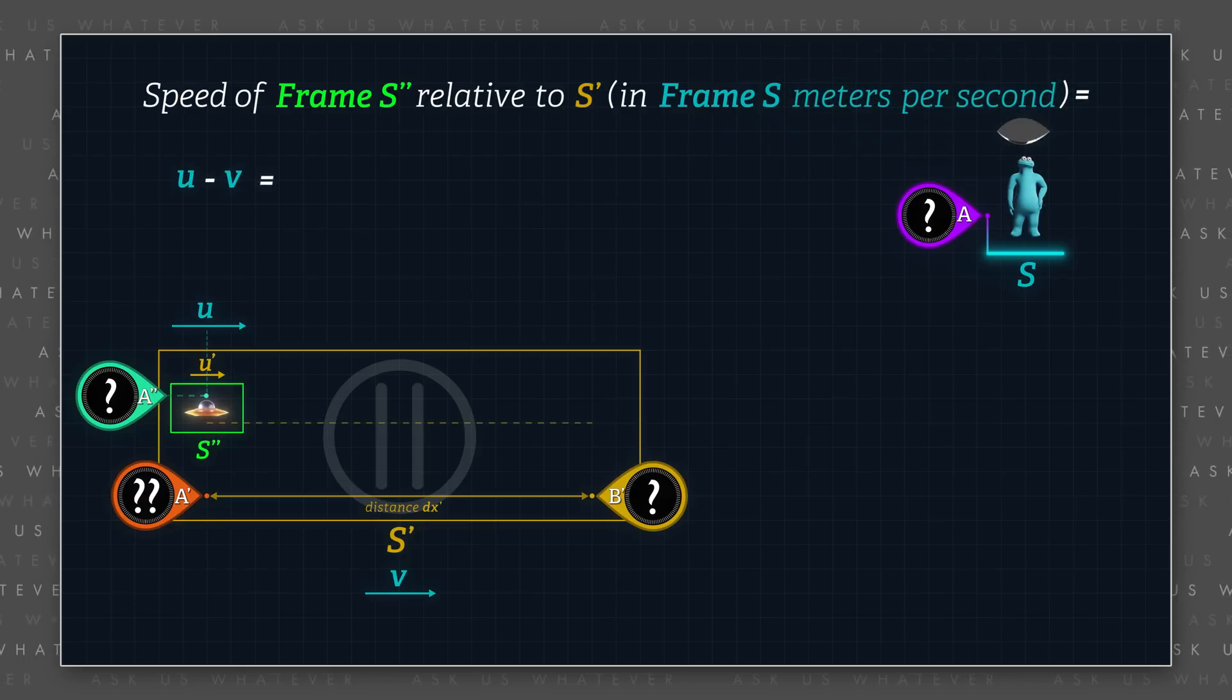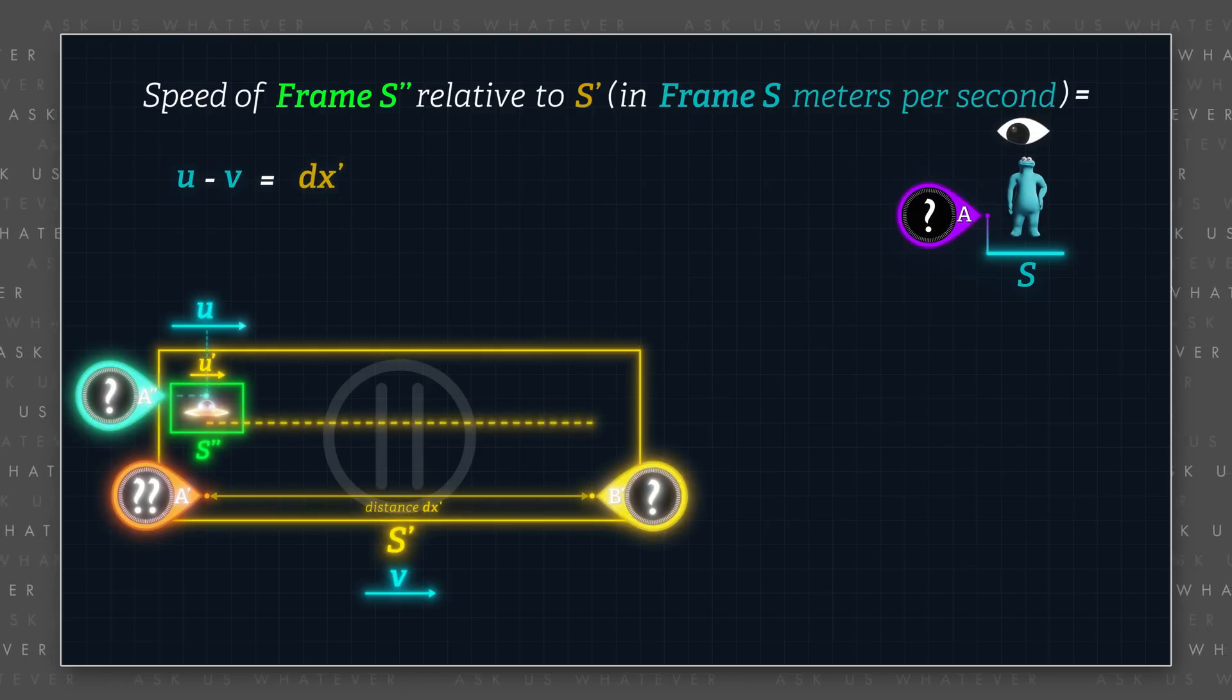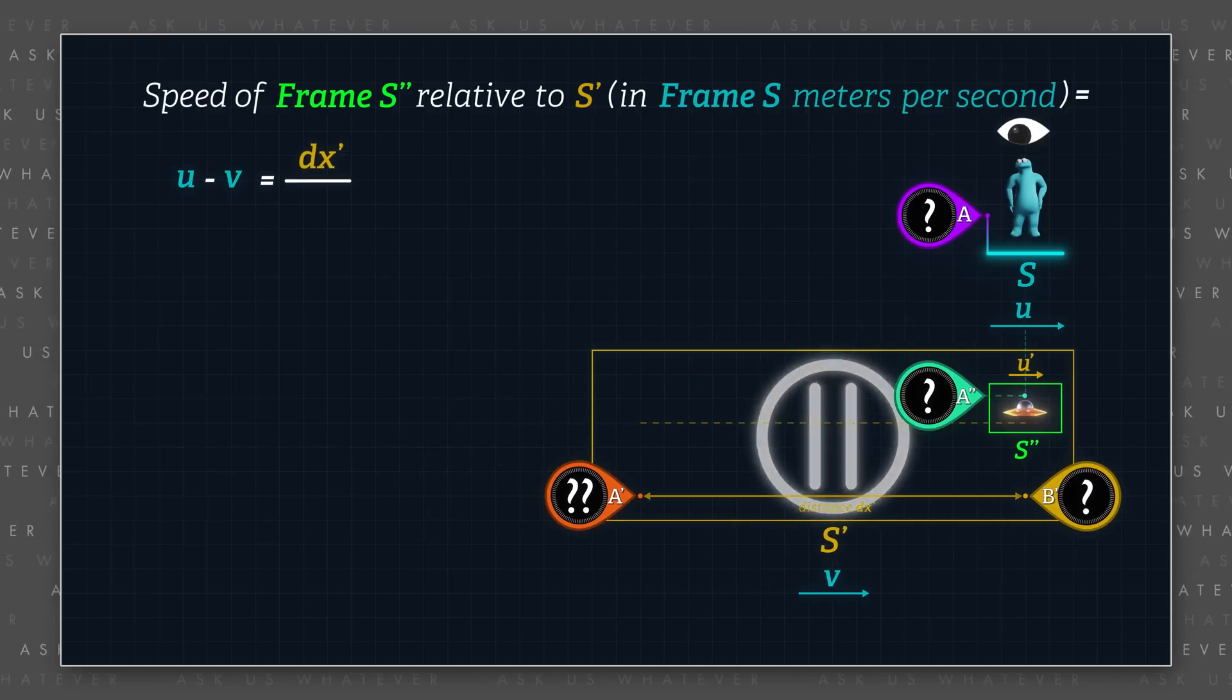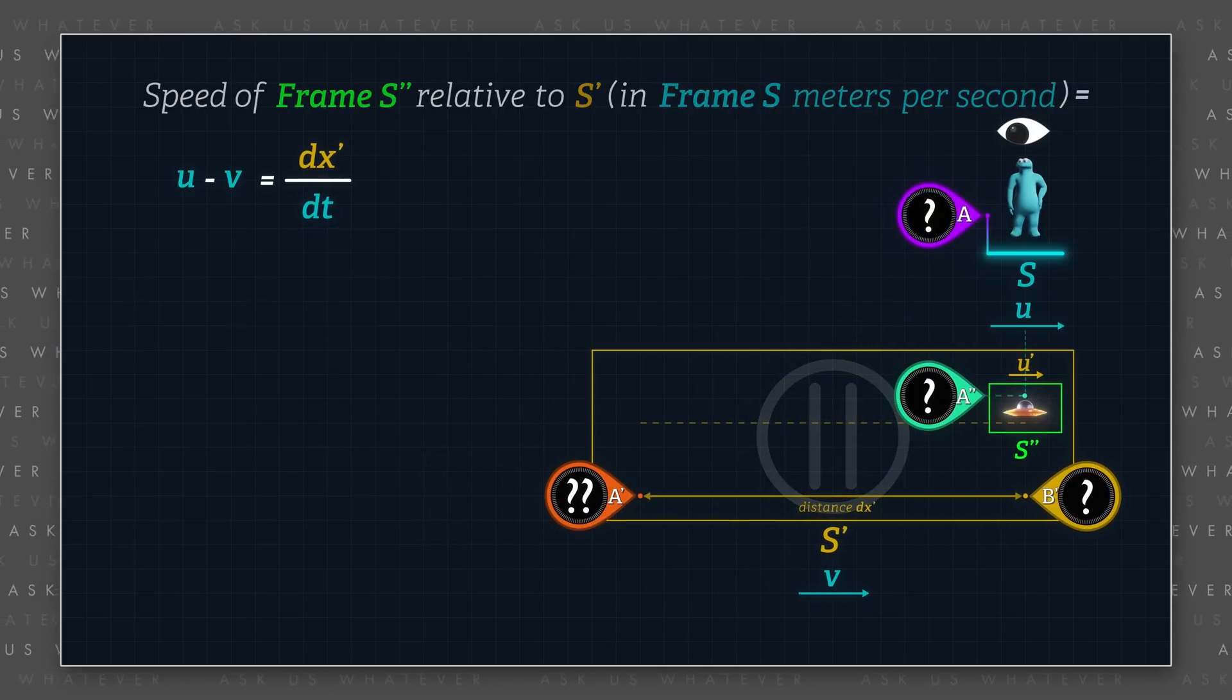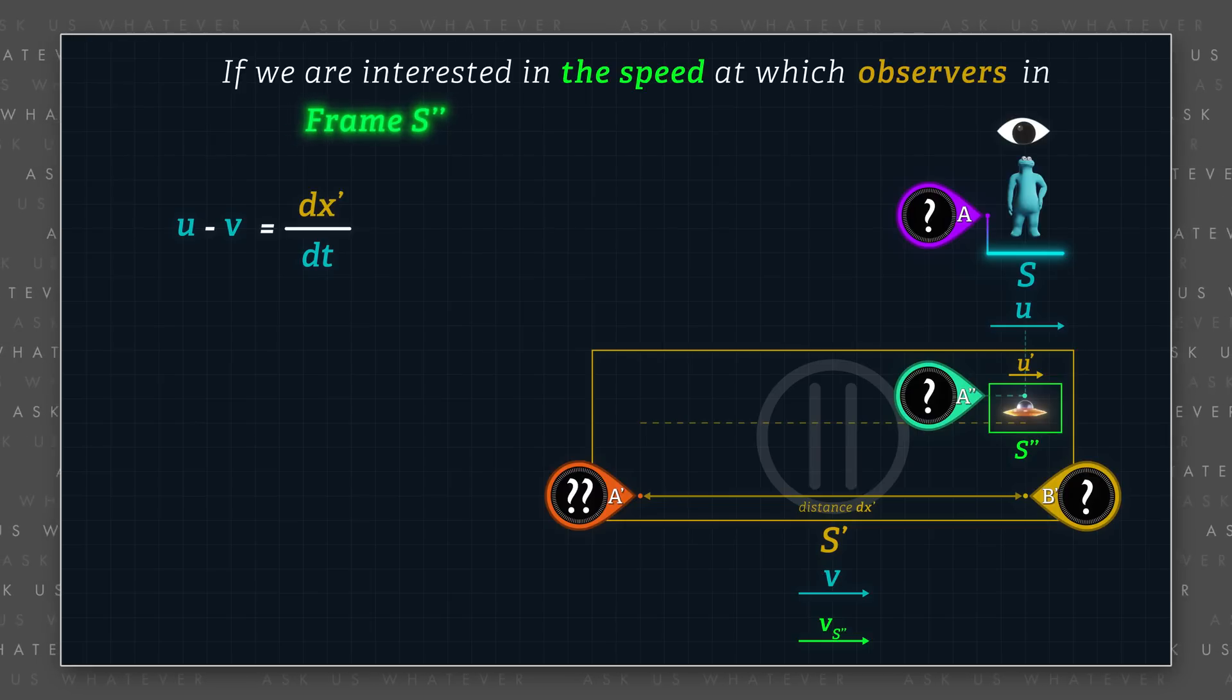This speed is the distance that s double prime or an object moving within frame s prime moves with respect to frame s prime divided by elapsed time measured with clocks in frame s. If we are interested in the speed at which observers in frame s double prime observe frame s prime to be moving,